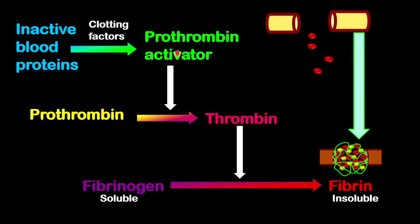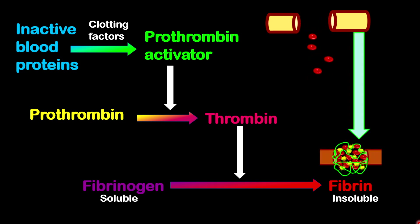The prothrombin activator will convert prothrombin into thrombin, and the thrombin will convert fibrinogen — which is a more soluble form of protein — into fibrin, which is a more insoluble form of protein, and that will reduce the flow of blood from your body. I really hope you have enjoyed this short lesson on how blood is clotted and how blood is prevented from leaving your body after a cut or an injury.